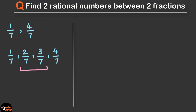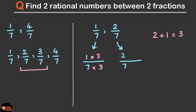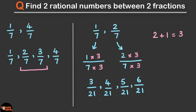But what if there's no gap? For example, if we have to find two rational numbers between 1 by 7 and 2 by 7, we can create a gap by multiplying the numerator and denominator by a number. Since we need two rational numbers, we multiply by 2 plus 1, which is 3. Multiplying the numerator and denominator of both fractions by 3, we get 3 by 21 and 6 by 21. The denominators are the same, and now there's a gap in the numerator — so the two fractions we can insert are 4 by 21 and 5 by 21.